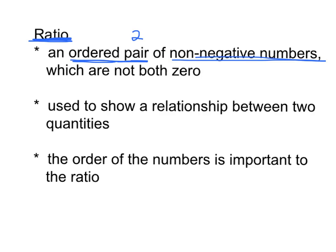Ratios are used to show a relationship between two quantities. I'll talk to you about what quantities are in a second, but it shows how the two quantities are related. And lastly, the order of the numbers is important, incredibly important to a ratio. If you don't put the numbers in the correct order, you're actually not finding the correct ratio.